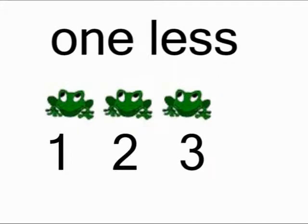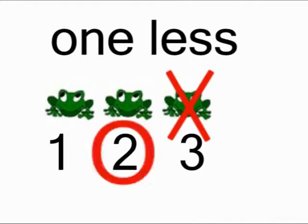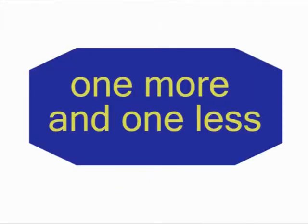If you have three frogs, how many is one less? One less frog makes two frogs. One less than three is two. Let's practice counting one more and one less.